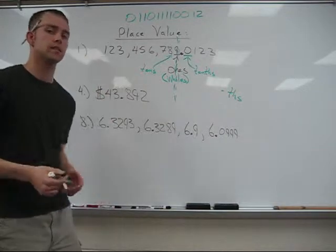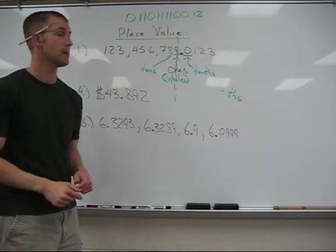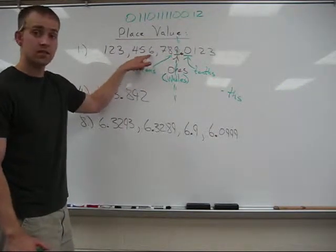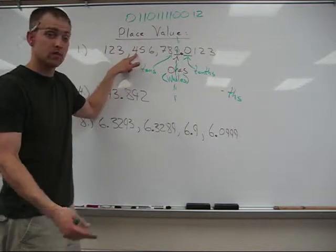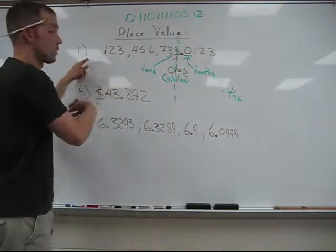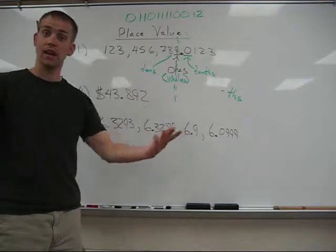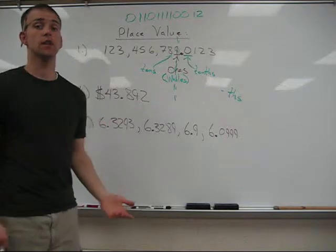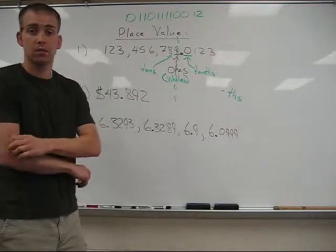If we continue in this fashion, it's really a pattern. We say: ones, tens, hundreds — one thousands, ten thousands, hundred thousands — one millions, ten millions, hundred millions — one billions, ten billions, hundred billions — one trillion, ten trillion, hundred trillion. So it's really a pattern. And as we work our way to the right of the decimal, it does the same thing: tenths, hundredths, one thousandths, ten thousandths, hundred thousandths — one millionths, ten millionths, hundred millionths — and so on.